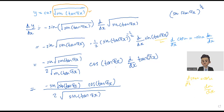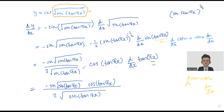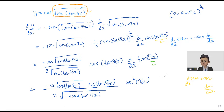When you differentiate tangent u, you will get secant squared u, times du by ds. So here πs is the u. When you differentiate tangent πs, you get secant squared πs. And then when you differentiate πs, you will get only π.